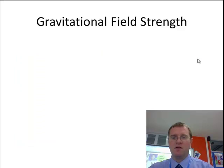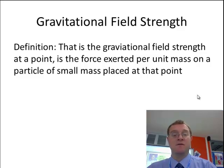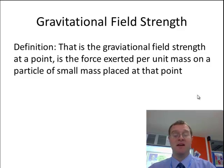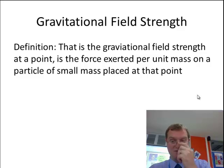A definition would look a little bit like: the gravitational field strength at a point is the force exerted per unit mass on a particle placed at that point. So we're thinking about how much gravitational force is dependent on how much mass it is, per unit mass.